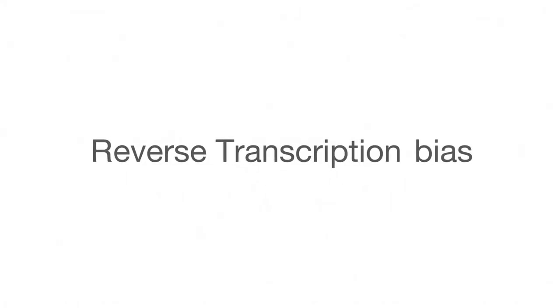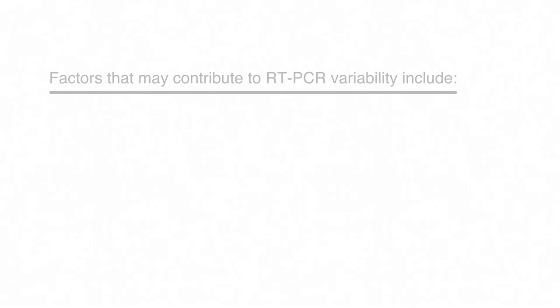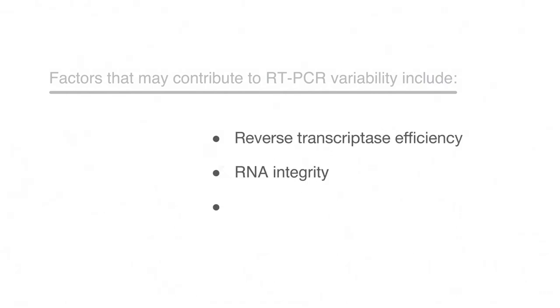First, be aware of reverse transcription, or RT, bias. We know that variability attributed to reverse transcription is far greater than the variability of qPCR alone. This increase in variance may be caused by factors such as reverse transcriptase efficiency, RNA integrity, and secondary structure. The reverse transcription step is therefore critical for accurate RNA quantification.